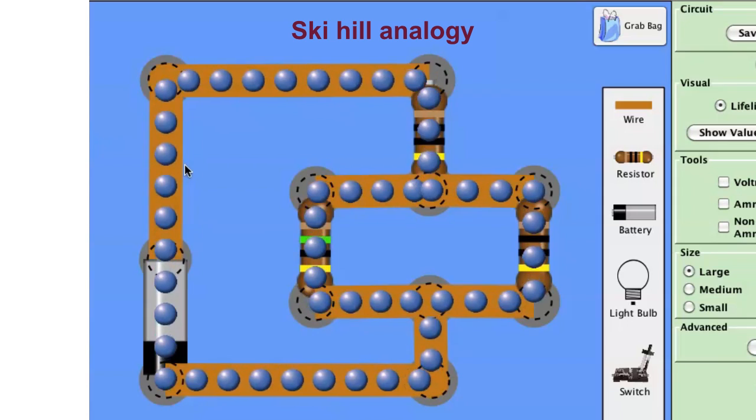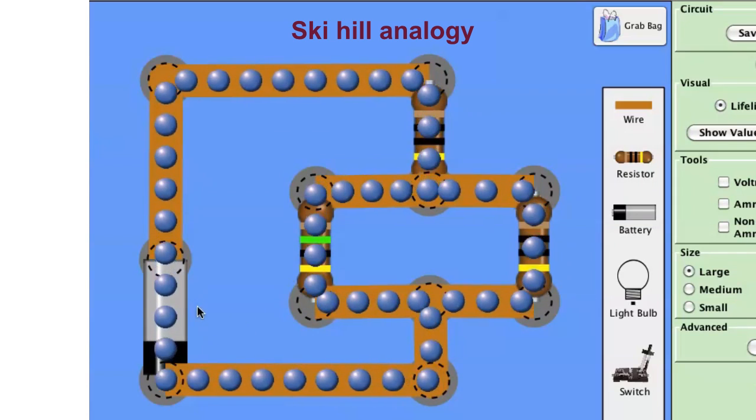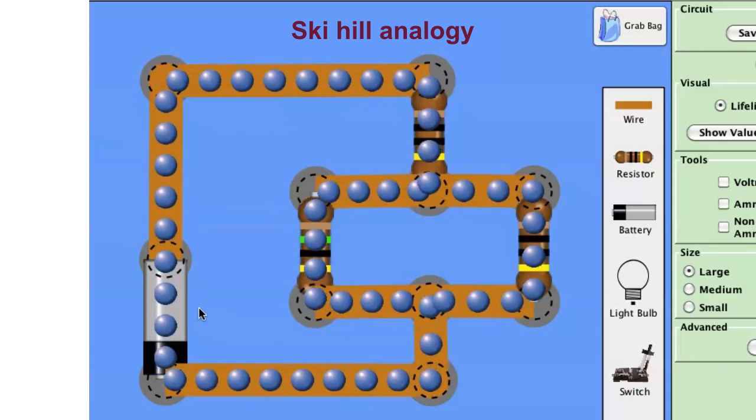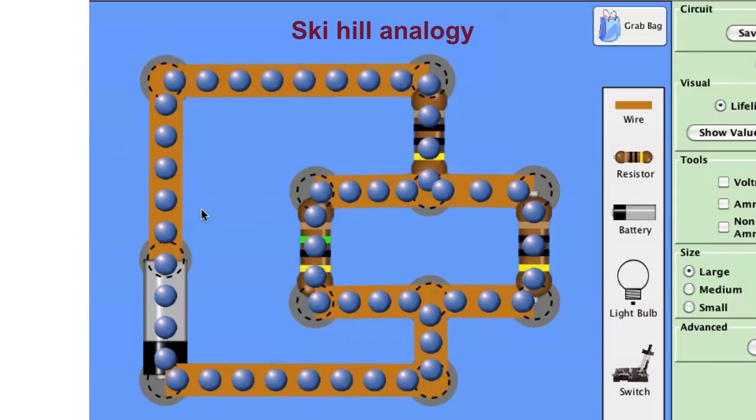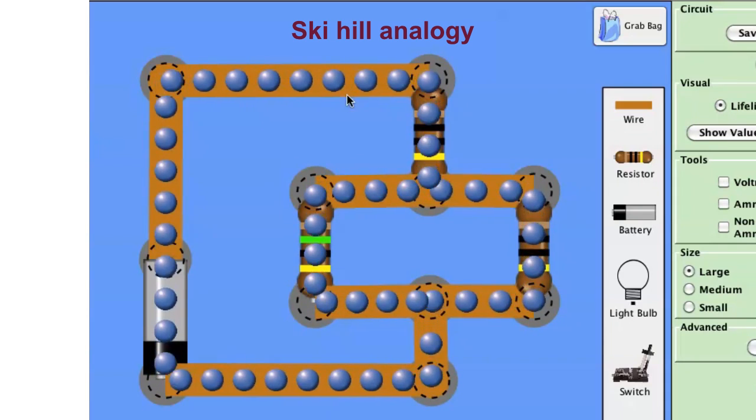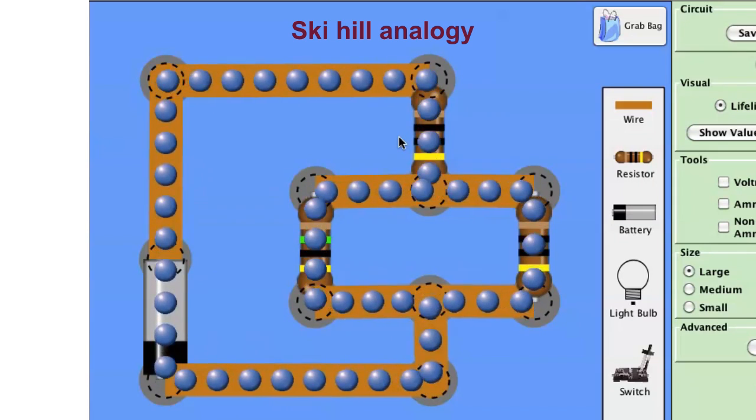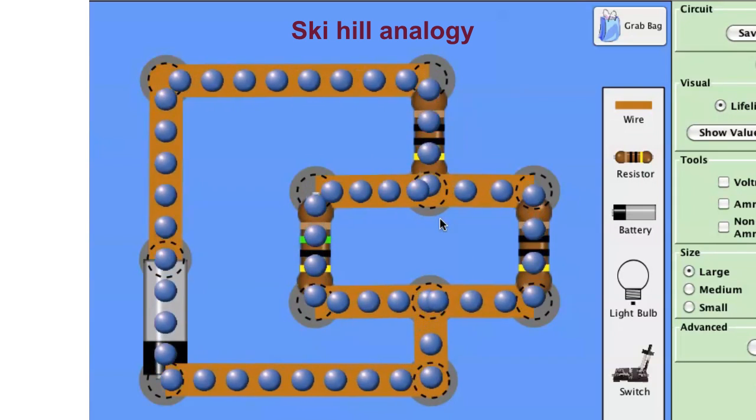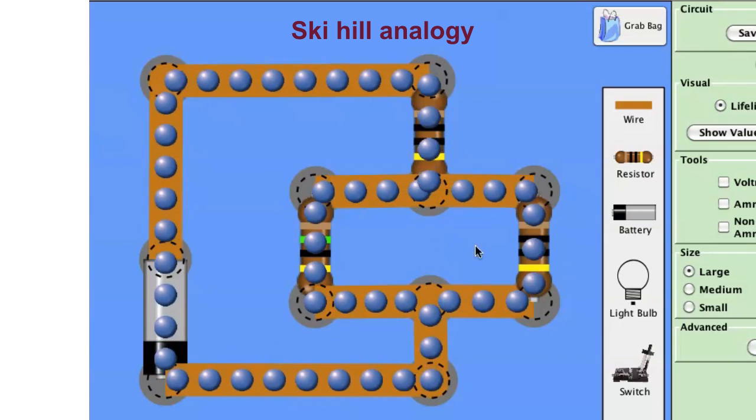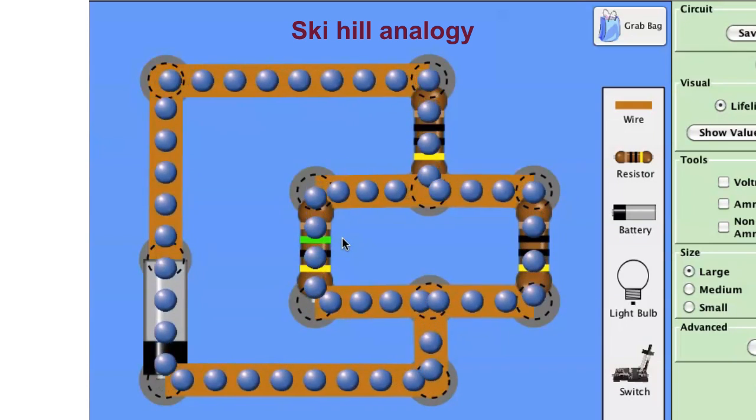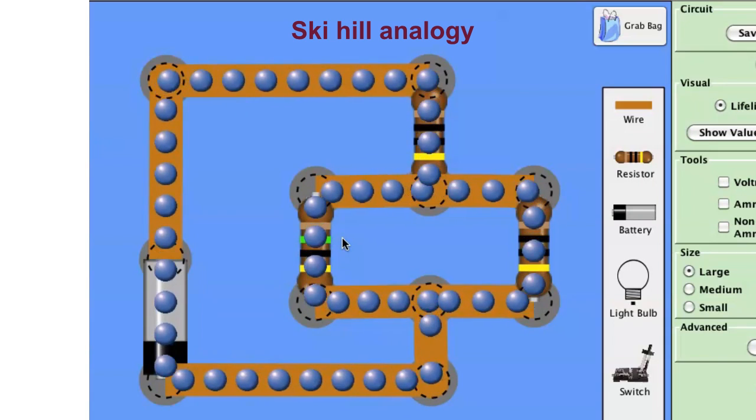So, here's our ski hill analogy. We've got a battery there acting as a chairlift, and what that is doing is lifting the skiers or the charges up to the top of the hill, and then they flow down through this one trail here, and then you can have a choice there. You can go to the left trail or the right trail to get the rest of the way down. The left trail is a little bit higher resistance than the one on the right.